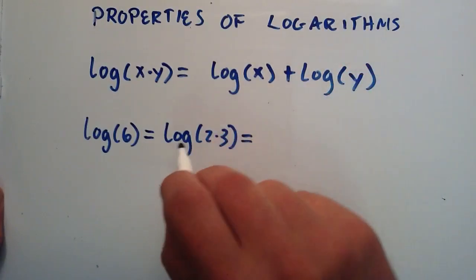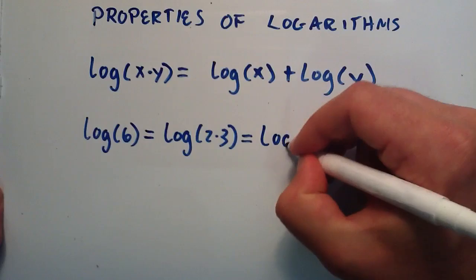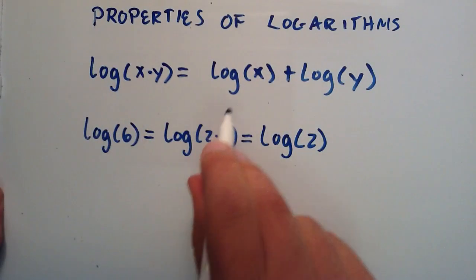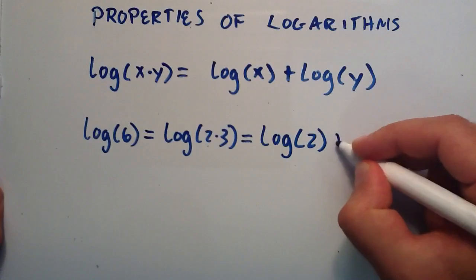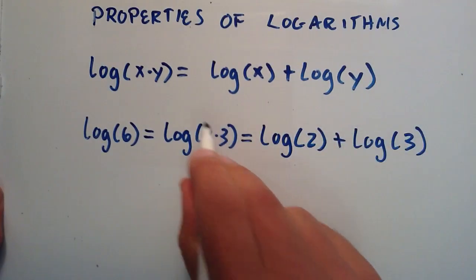And then we can say that the logarithm of 2 times 3 is equal to the logarithm of 2, because that's where the x position is, plus the logarithm of 3 in our y position.